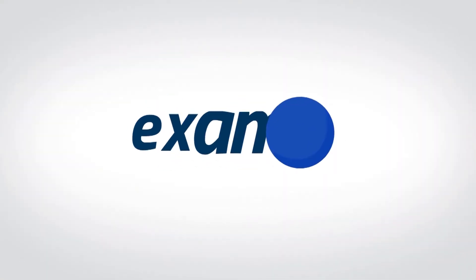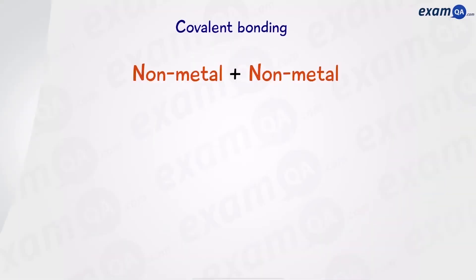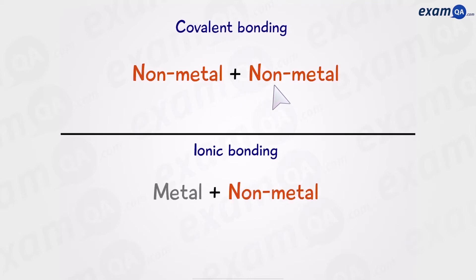Covalent bonding. Covalent bonding is a type of bonding that occurs between two or more non-metals. This is different to ionic bonding which requires a metal and a non-metal.